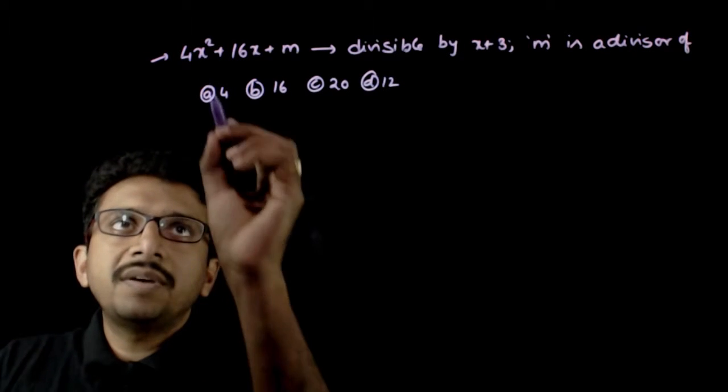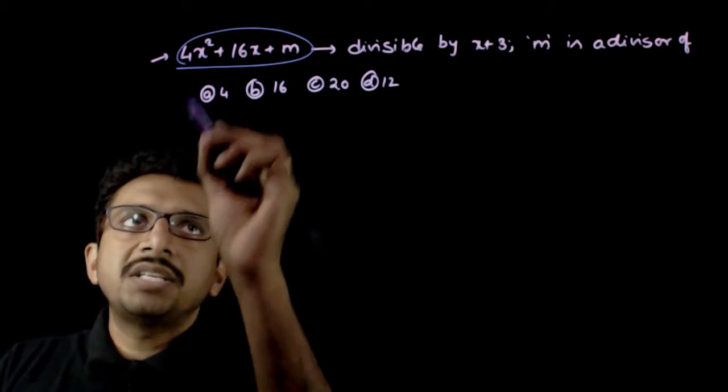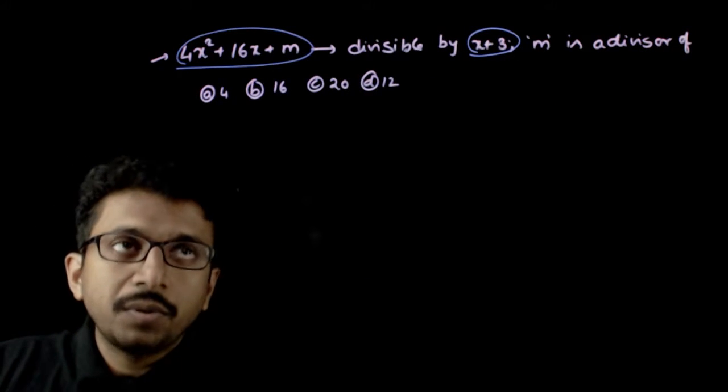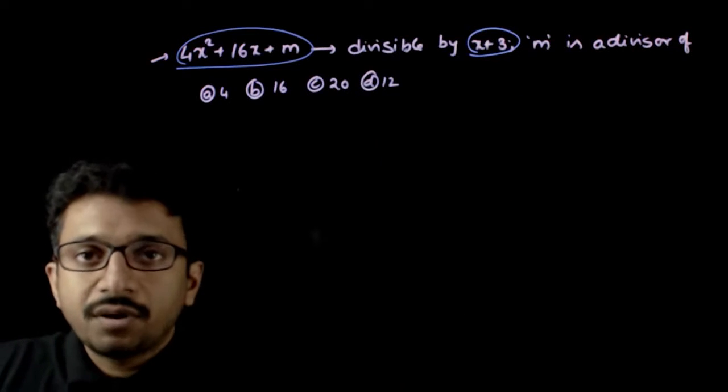Welcome students. In this question, you are given that 4x squared plus 16x plus m is divisible by x plus 3. So if that is so, m is a divisor of which number?